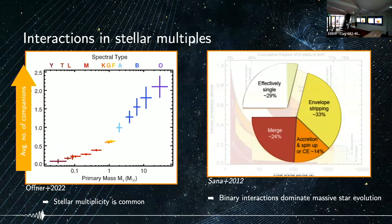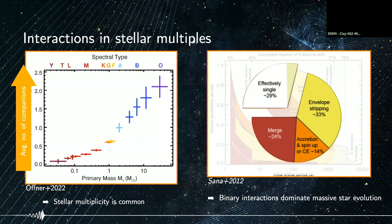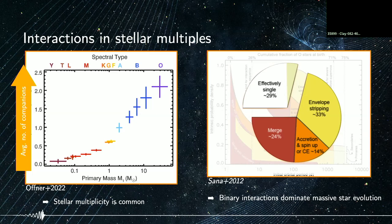Not only are stars often in higher-order systems, they also often undergo interactions with each other. This plot, taken from SANA 2012, shows that binary interactions dominate the outcome of massive star evolution — up to 70%. Stars can exchange mass, accrete and spin up, or merge and form a single merger product.